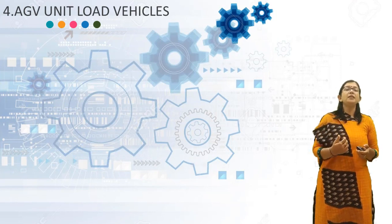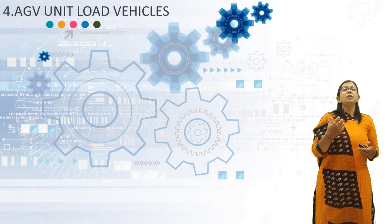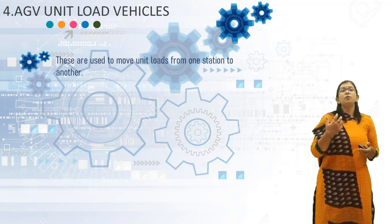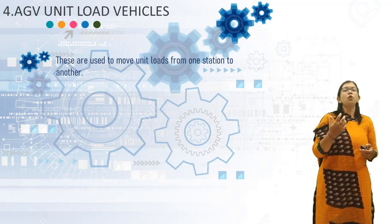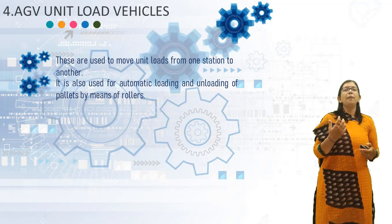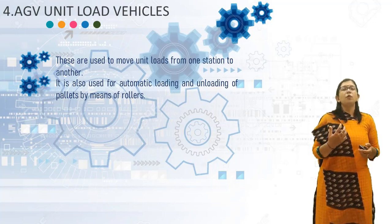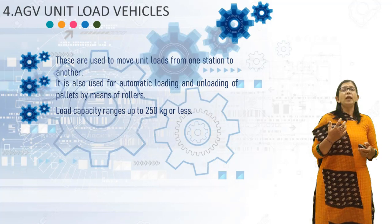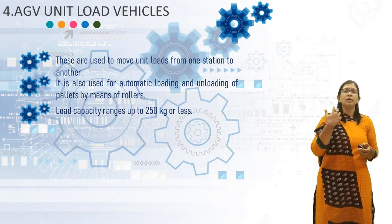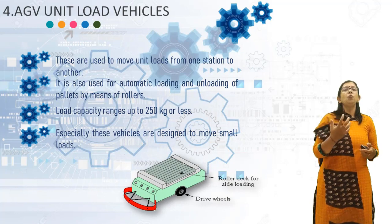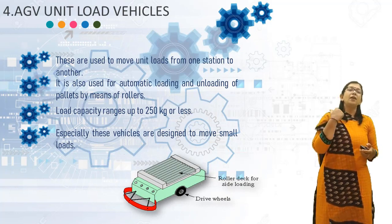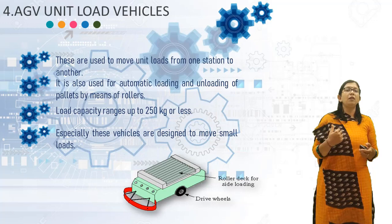The next type is AGV Unit Load Vehicles. These are used to transport unit loads from one station to another station. They are also used for automatic loading and unloading of pallets by means of rollers. The load capacity range of this vehicle is up to 250 kg or less. These vehicles are specially designed to move small loads, as you can see in the diagram.